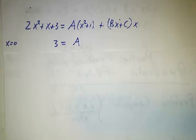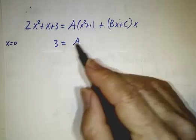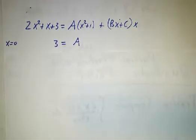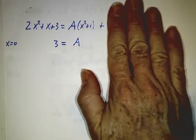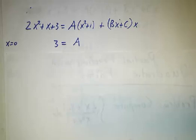And so we still have a root of the other terms. So we can plug in x equals 0. We plug in x equals 0, this term disappears and you get 3 equals a. Wonderful, we've got a.